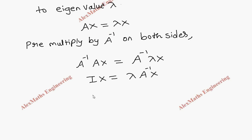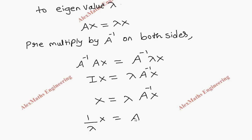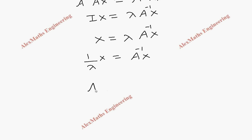From this, I into X is X itself, equaling lambda into A inverse into X. We can take lambda to the other side, so 1 by lambda into X equals A inverse into X. This can be written as A inverse X equal to 1 by lambda into X.